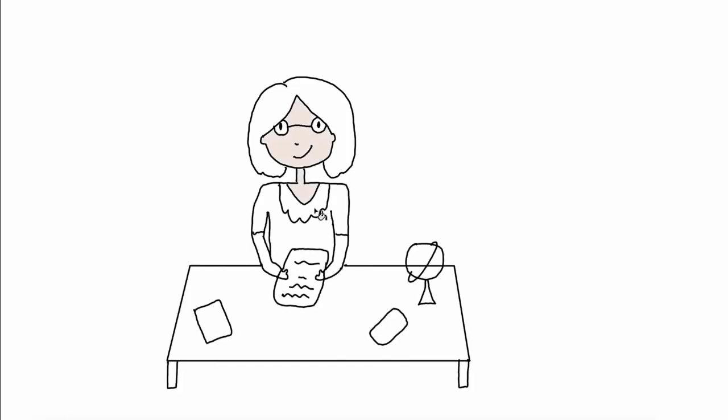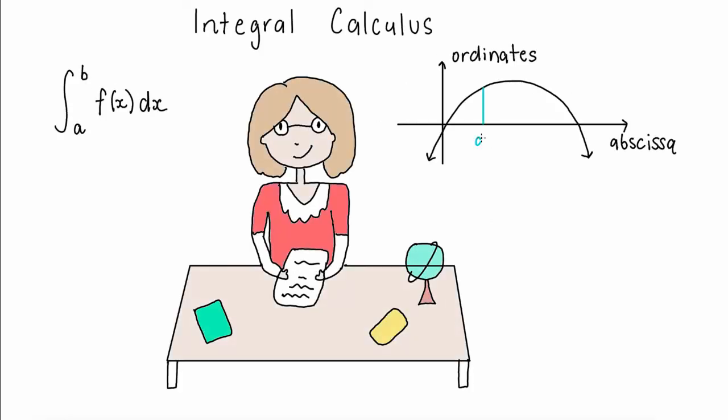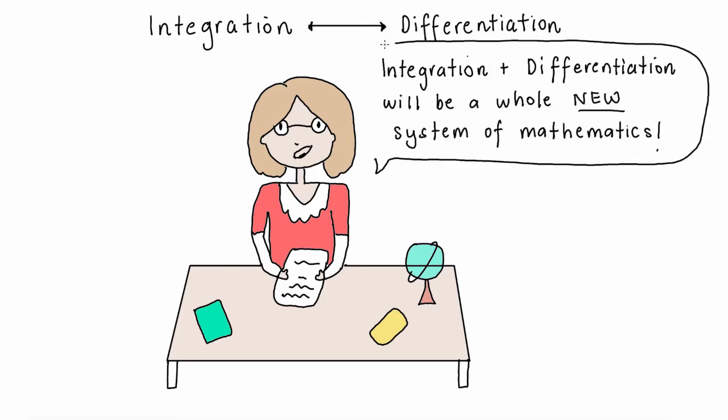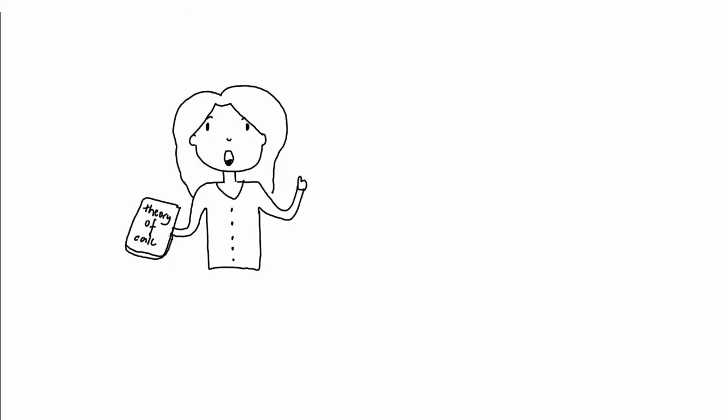He reasoned that the integral is the sum of the ordinates for infinitesimal intervals in the abscissa, so the sum of infinite rectangles. From these definitions, he quickly identified the relationship of integration with differentiation, and he realized the potential to form a whole new system of mathematics. In 1684, he published his work on the theory of calculus, which included differential and integral calculus.